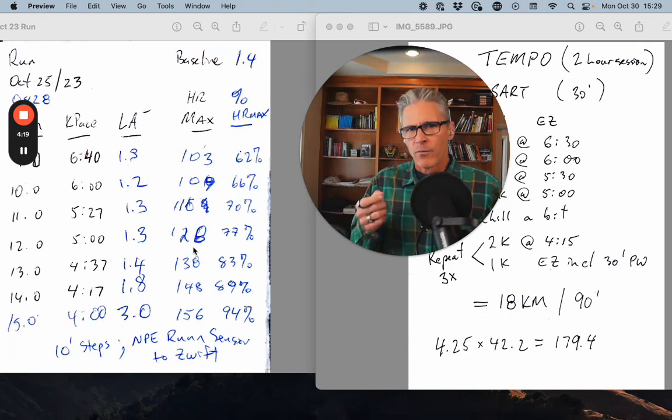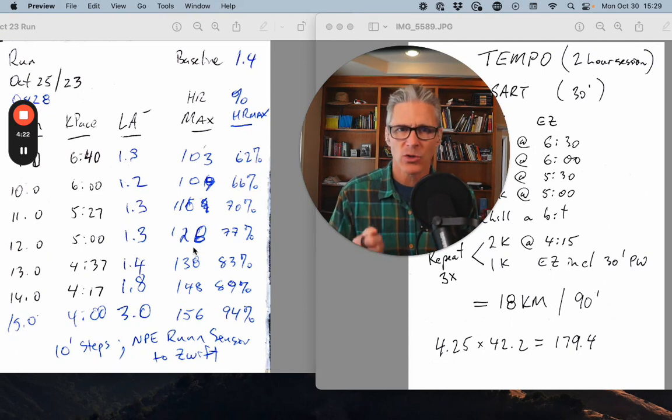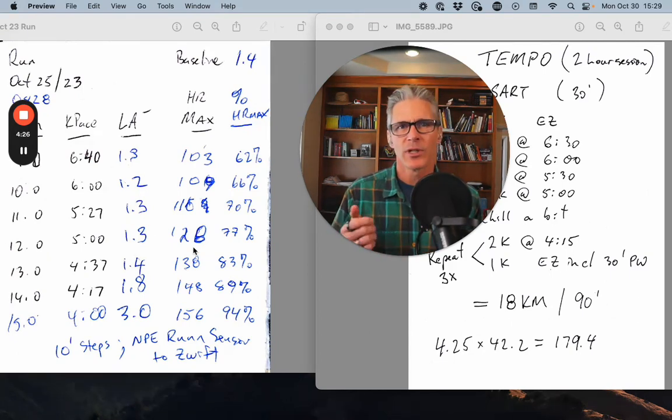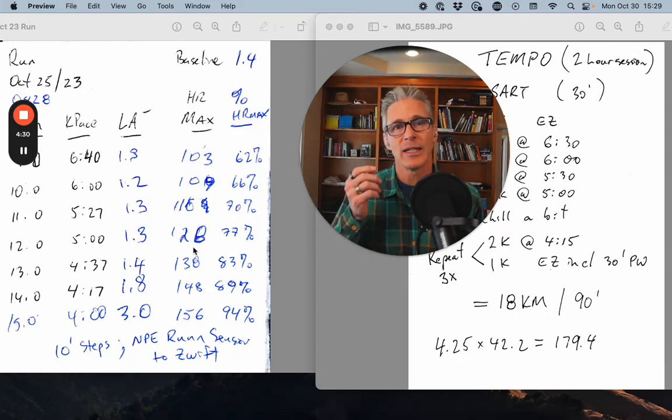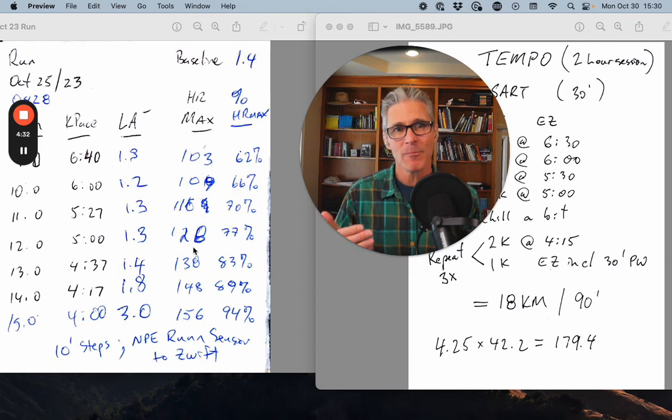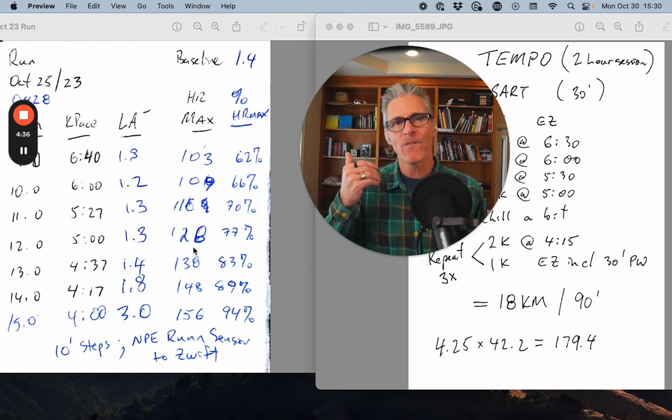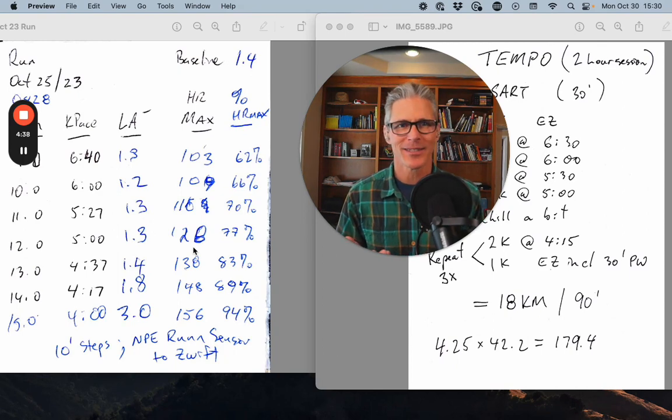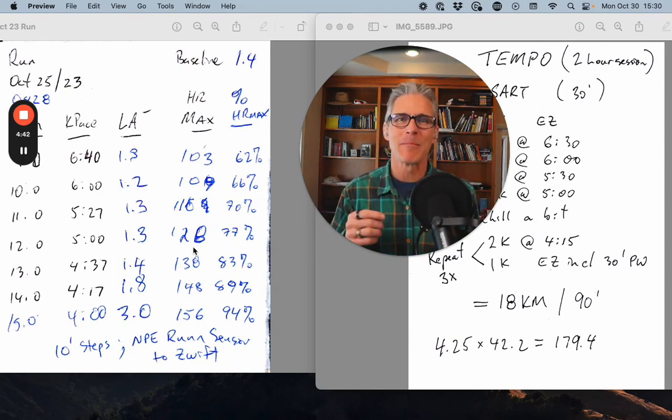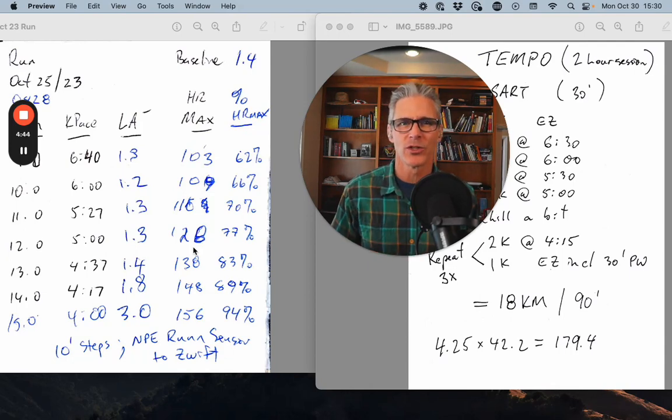However, for the marathon, many of us have pace goals, and to reality check those pace goals, we're going to need a run at those paces. The other benefit is, as we roll up time at those specific paces, we're going to get more economical, more efficient at those paces. So we're getting the reality check, but we're also getting better at doing what we want to do.